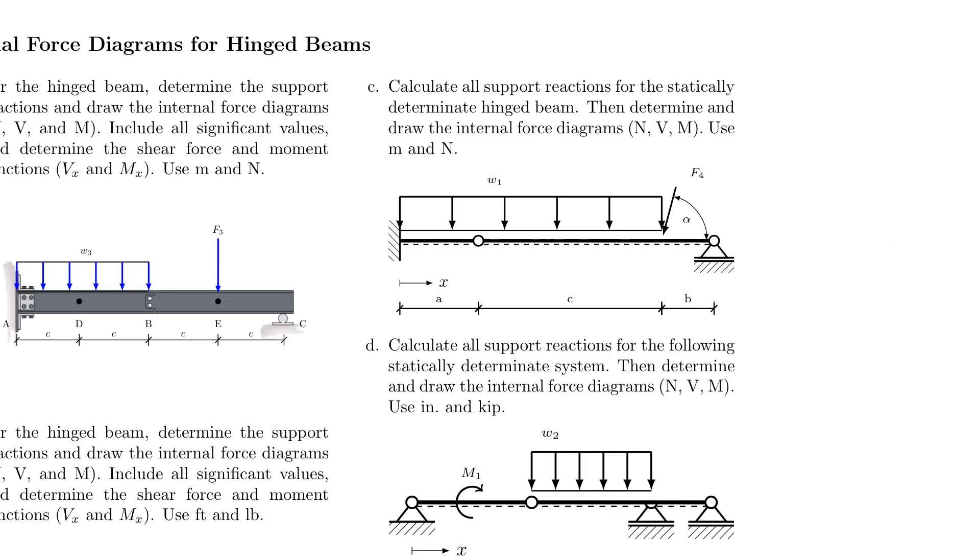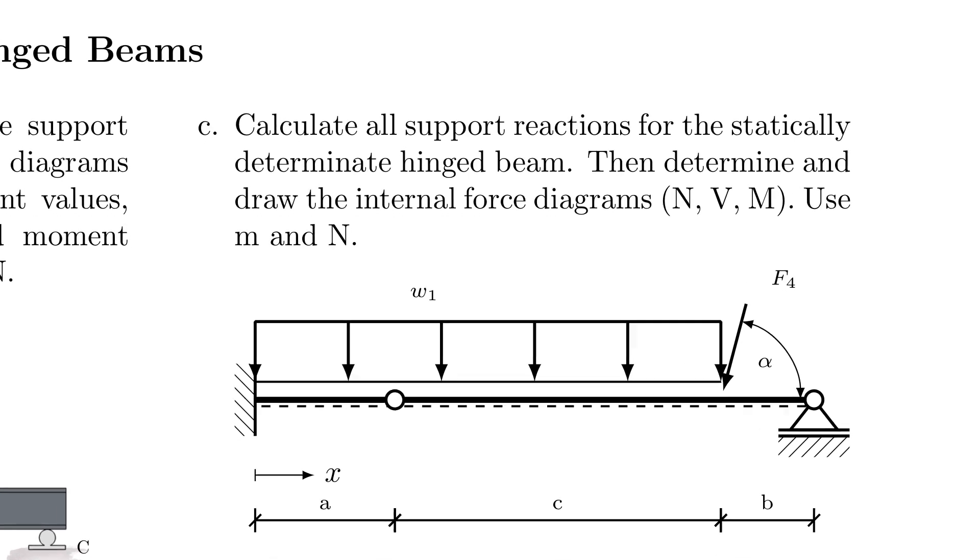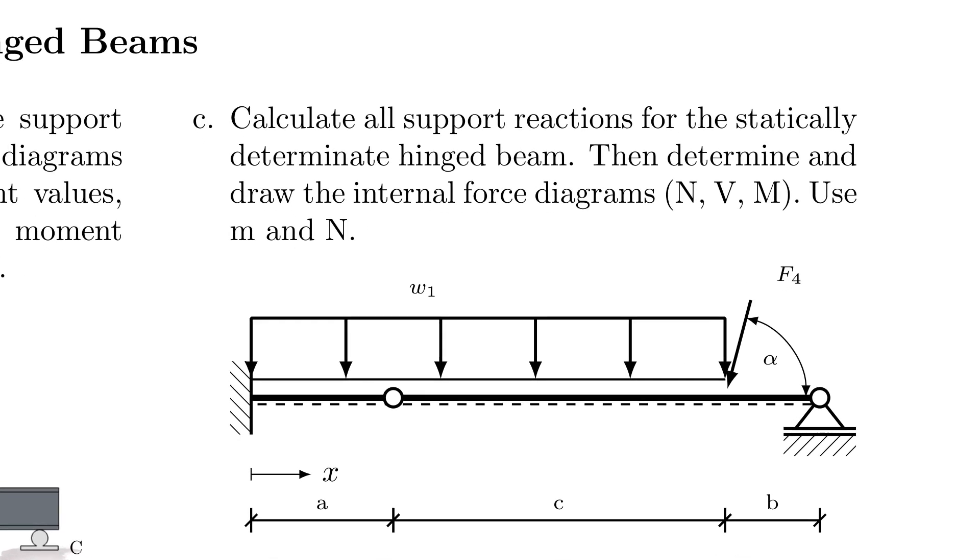Here we have similar problems just shown in a different symbolic representation. Here we have a cantilever beam that supports a simply supported beam. Now you also have to deal with normal force cases due to the force that is acting under an angle alpha. I think this should be straightforward if you followed the examples we discussed in this lecture.